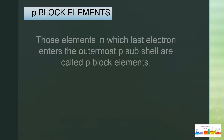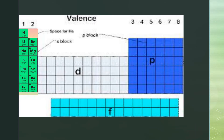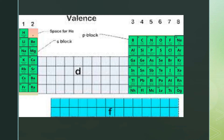P block elements are those elements in which the last electron enters the outermost P subshell. P block elements occupy positions from Group 3A to Group 8A — that is, Group 3A, 4A, 5A, 6A, 7A, and 8A elements are known as P block elements.